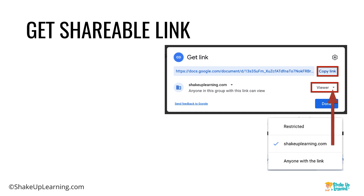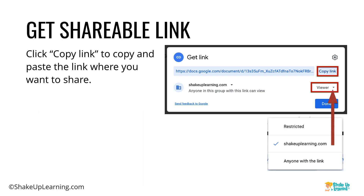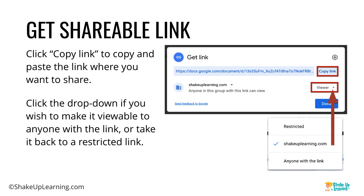Once you click that button, there's another pop-up screen, and from here you click 'Copy link' to copy and paste that link wherever you want to share it — throwing it into an email, putting it on a website, wherever it needs to go. You can also click the drop-down if you wish to make it viewable to anyone with the link. If the default says 'Anyone in Shake Up Learning can view,' you can click the drop-down and change it to 'Anyone with the link,' meaning people outside your domain, or go back to 'Restricted,' which means it's back to private.